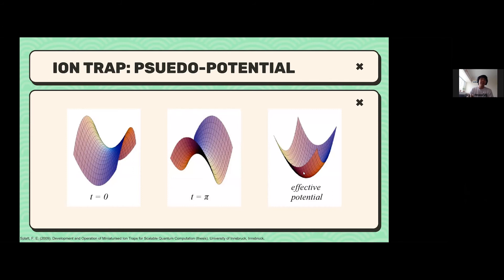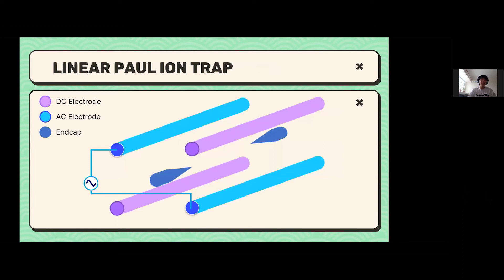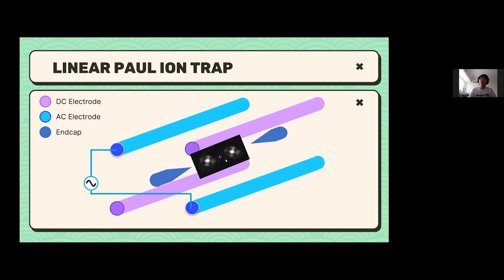Specifically, this is a linear Paul ion trap, consisting of four rods: two with static DC voltages and two with AC voltages. Along the axial z-axis there is a DC potential as well. The electric potential along this trap is harmonic along the z direction. You can just put ions there and they will stay for almost as long as you wish. In our lab we've taken a picture of two trapped ions in one of these ion traps — those bright dots are the trapped ions along the axis.